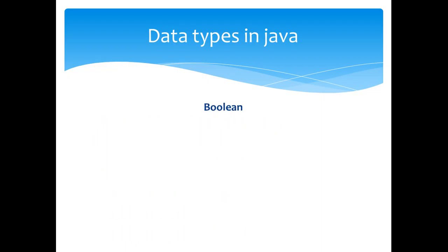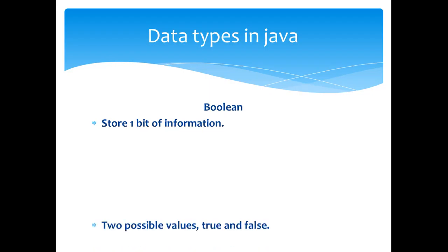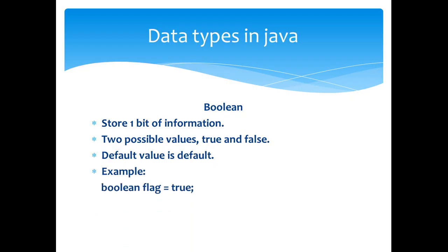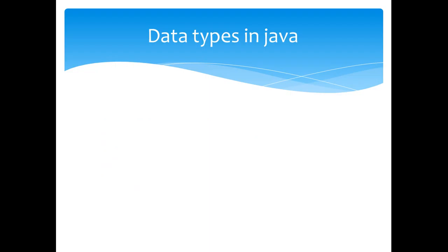The next is the boolean type. It is used to store 1 bit of information at a time. There are two possible values for the boolean type, which are true and false. The default value of boolean is false. Example: boolean flag is equal to true.